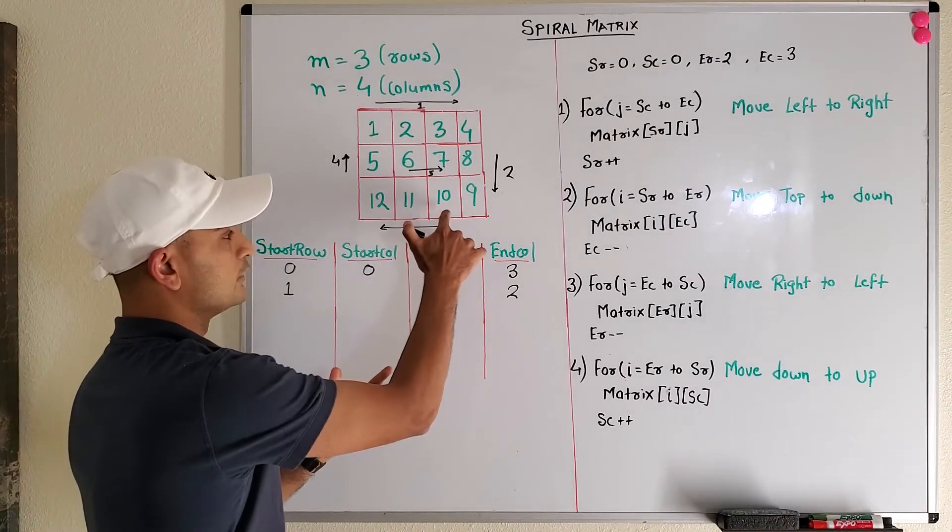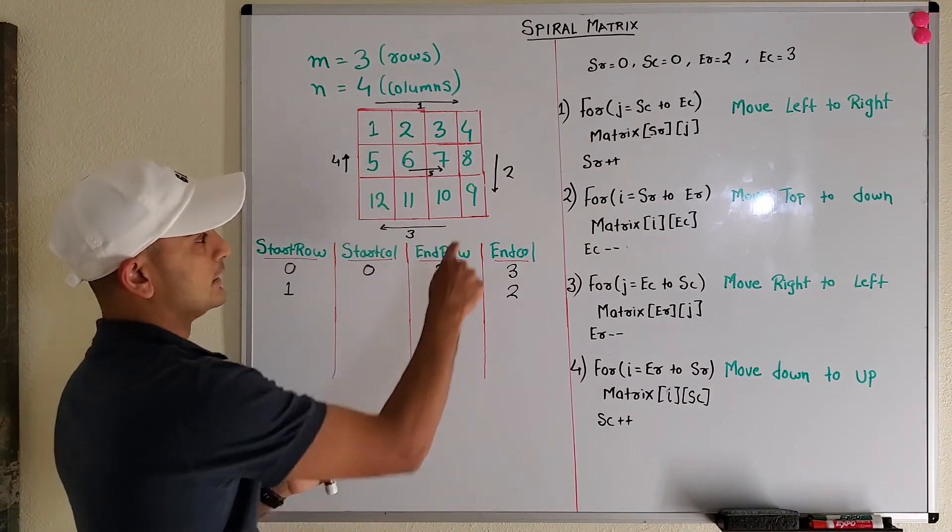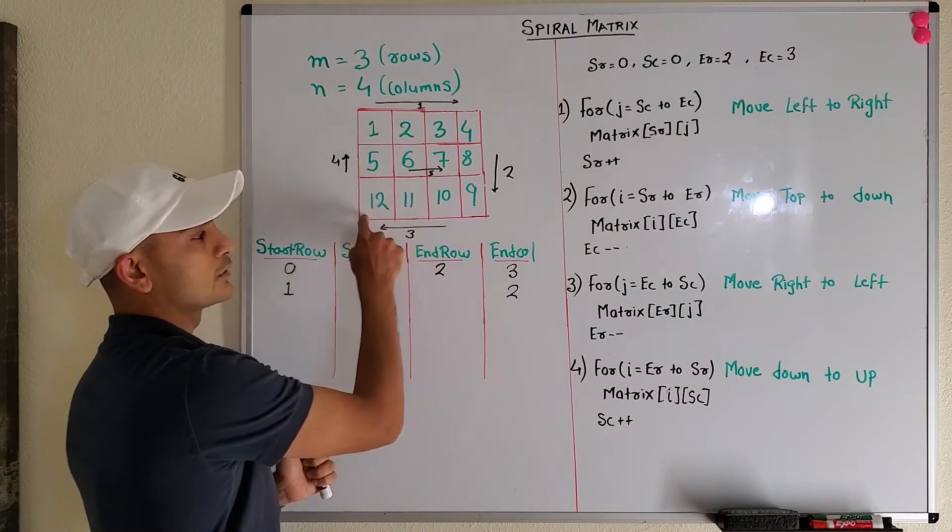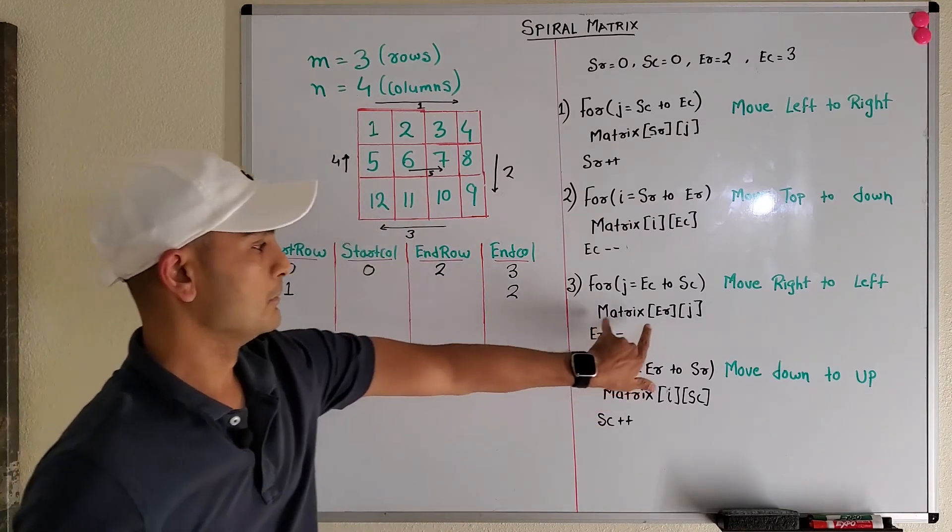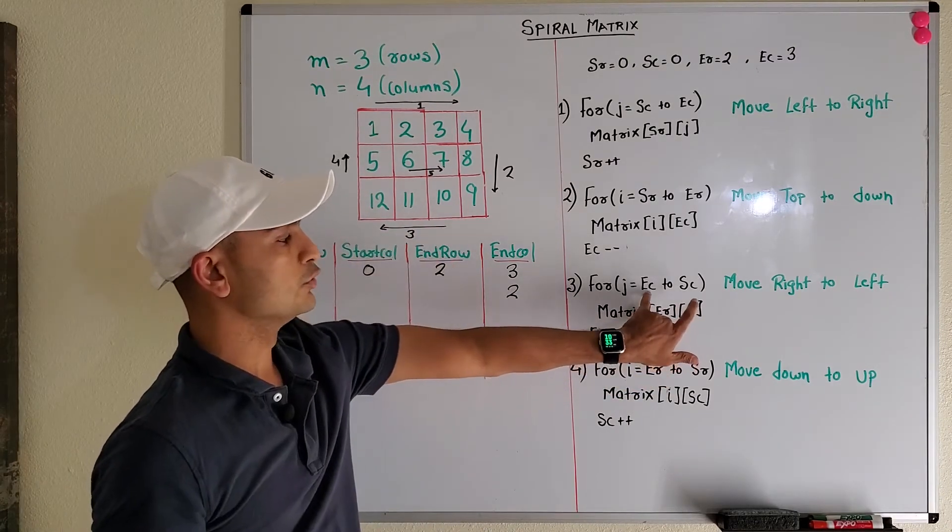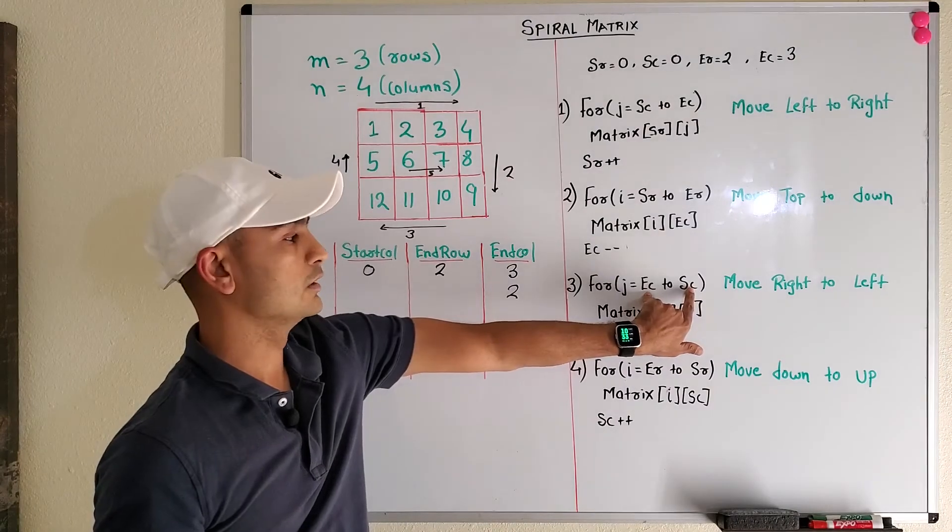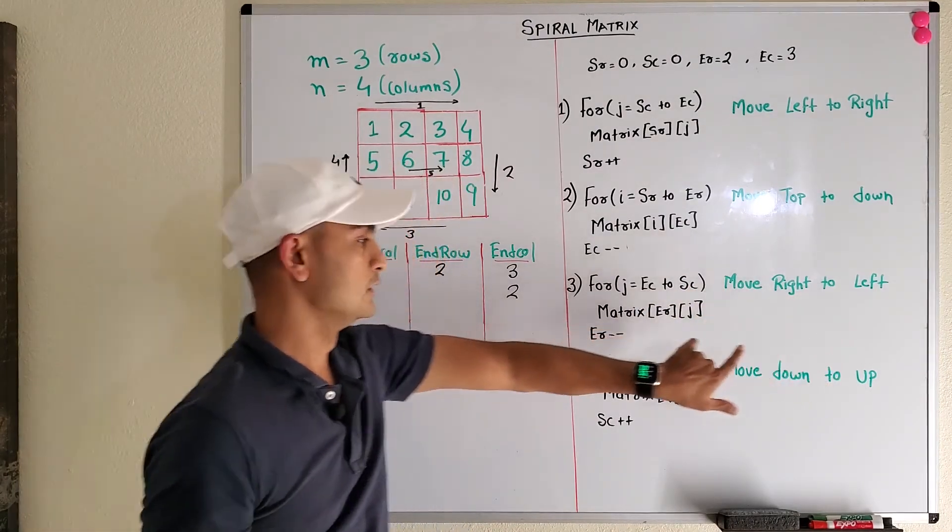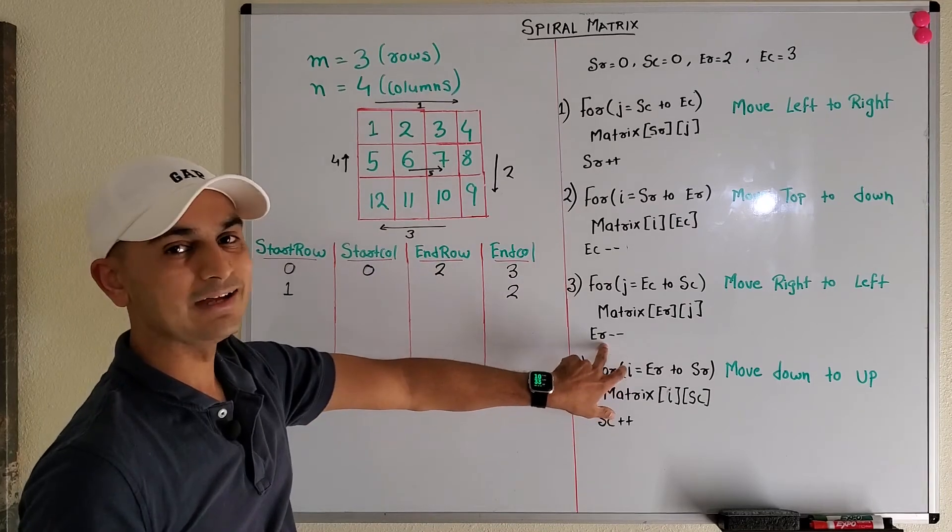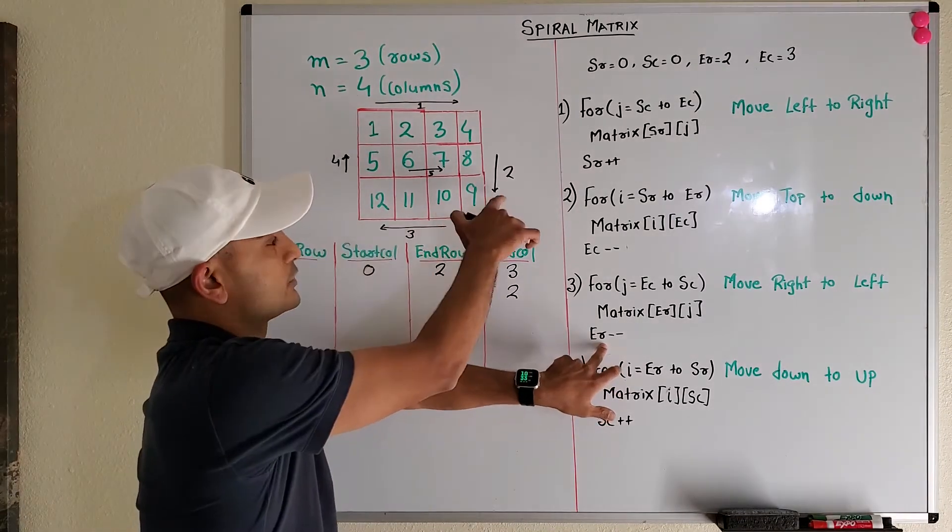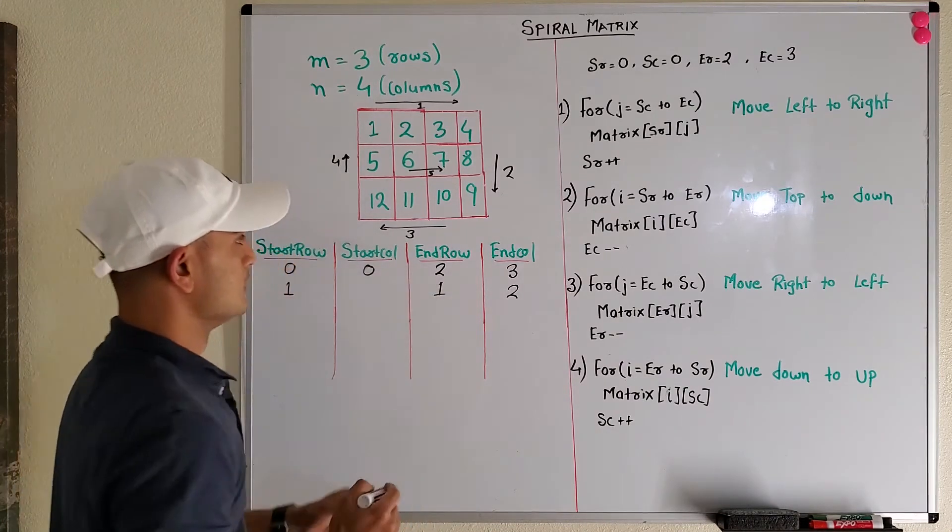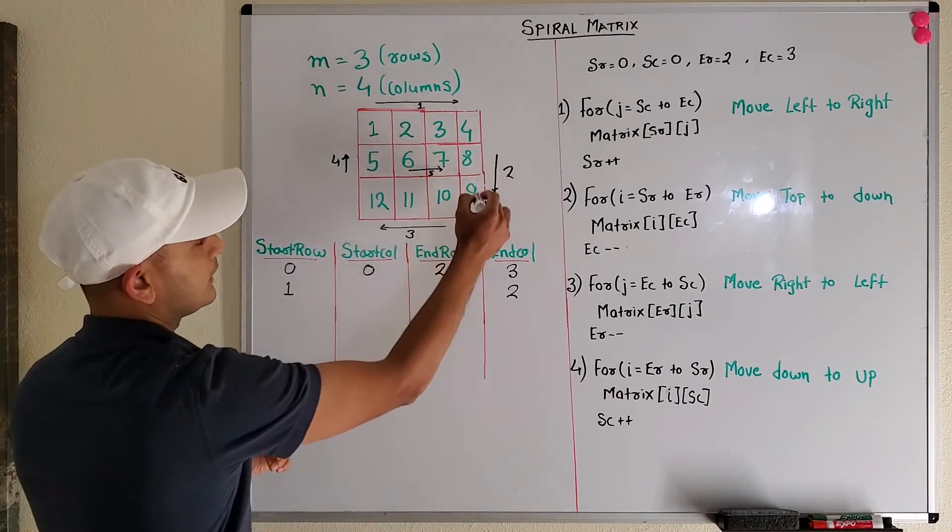Next, we need to access ten, eleven, twelve, so the last row but from end column to start column, right? Matrix of end row, last row, and our loop goes from end column to start column. So we're going right to left: ten, eleven, twelve. Then we do end row minus minus, saying that this row is done, so end row becomes one.